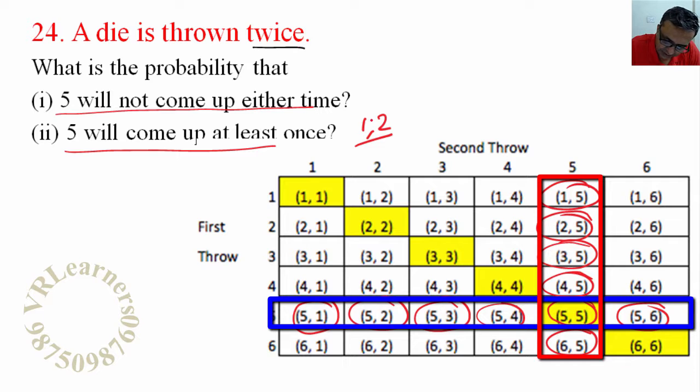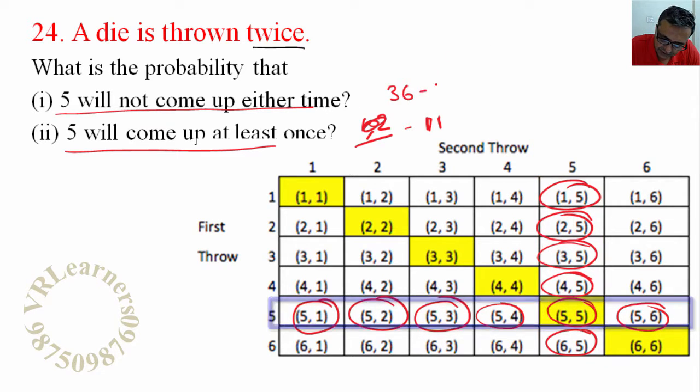So now I know that 5 will come at least once has 11 outcomes. And 5 will not come either time? Out of 36 total chances, 11 are gone, so 25 times 5 will not appear.